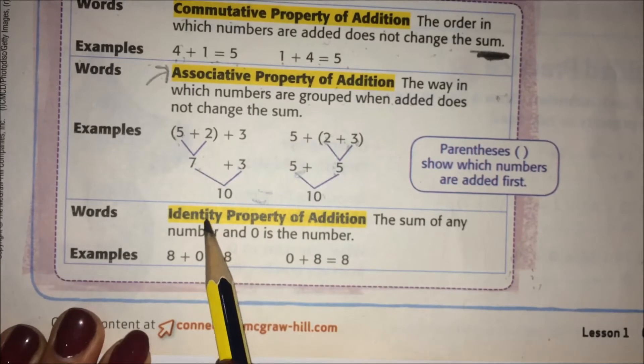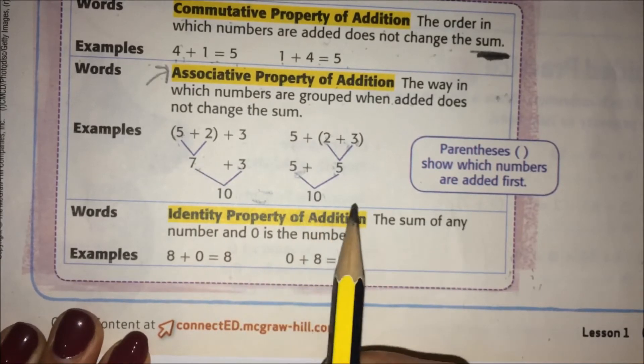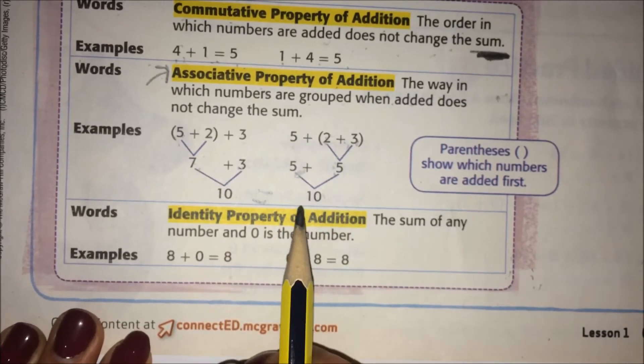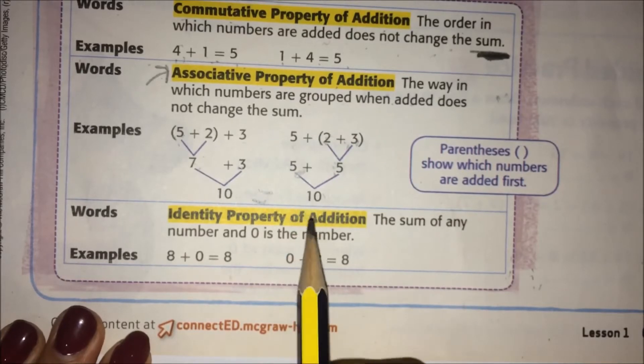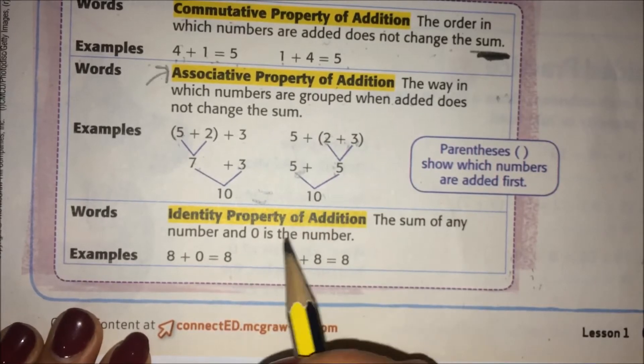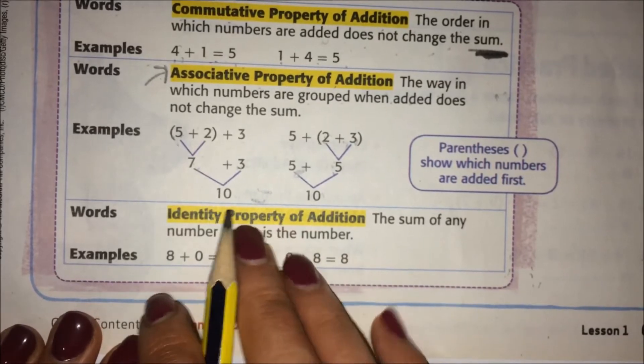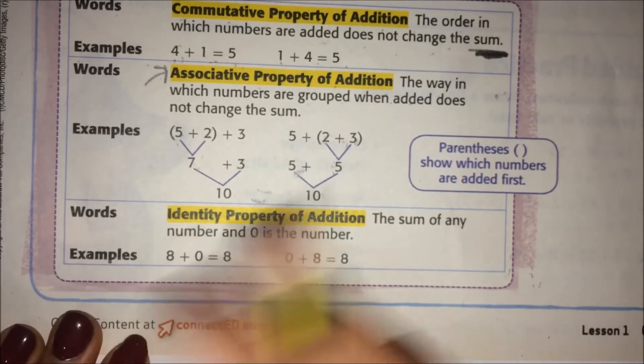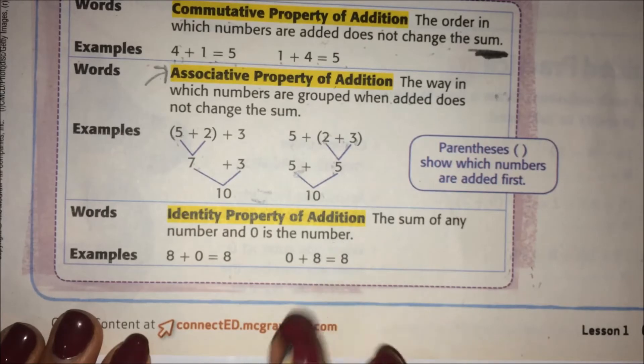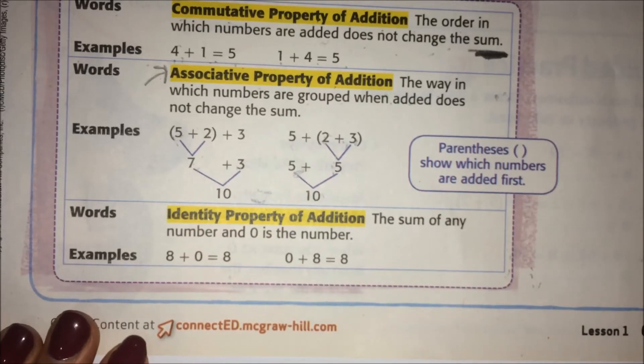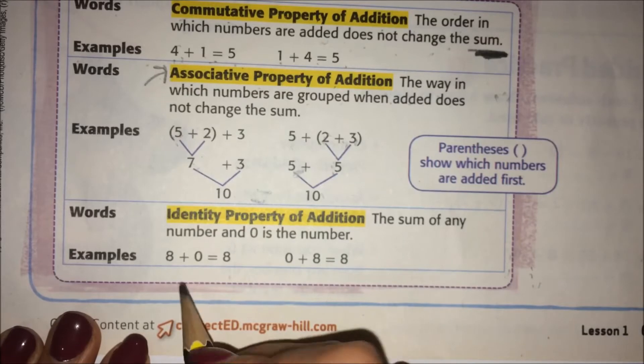Then you have the identity property. You can think of the identity—that's who you are. So maybe my identity: I'm a teacher at NIS, or I'm an American, or I'm a woman. Those are things about my identity. You are a student, you are a boy, you are a girl, you are an athlete, you are a nice person. Those could be your identity.